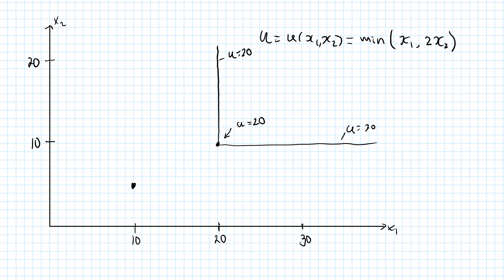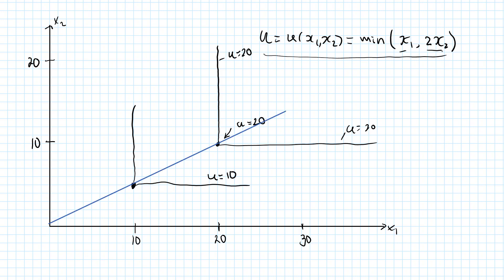In the same way, you can see that the bundle (10, 5) is the corner of another indifference curve with utility of 10. So as you can see, this utility function min(x1, 2x2) is associated with indifference curves whose corners line up on a blue line which has a slope of one half. In this case, I am consuming these two goods in a 2-to-1 ratio — for every unit I consume of good one, I will consume half a unit of good two.